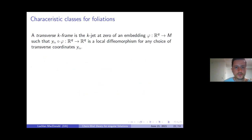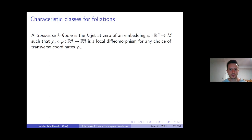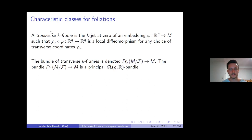This means one might expect to construct characteristic classes for the transverse space or leaf space of a foliation in the same way one constructs characteristic classes for manifolds — and indeed, this is true. Instead of frames for a manifold, we have transverse frames for a foliated manifold. A transverse K-frame is the K-jet — a K-th order Maclaurin polynomial of an embedding from Q-dimensional space (Q the codimension) into M, such that post-composing by any transverse coordinates gives a local diffeomorphism of R^Q.